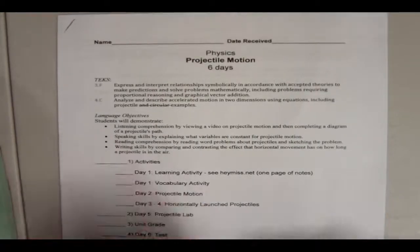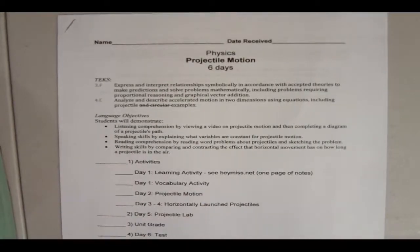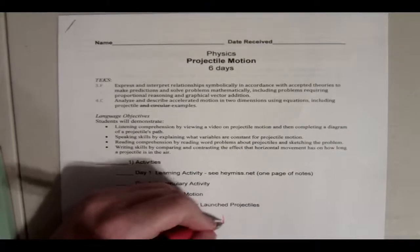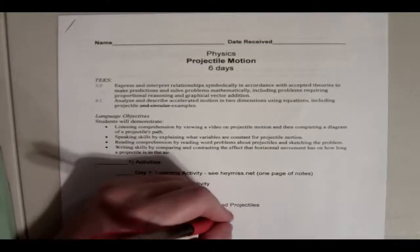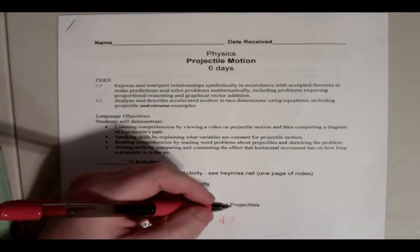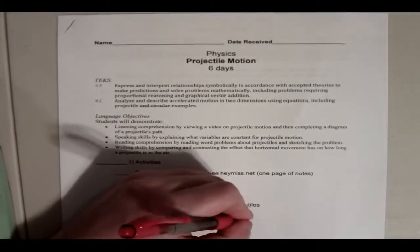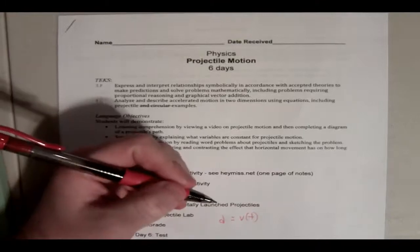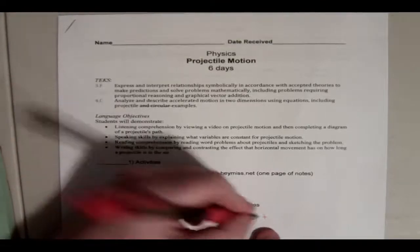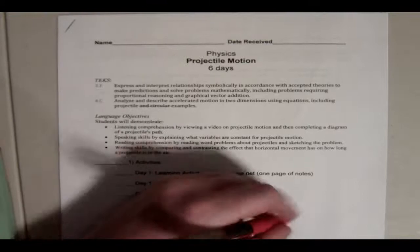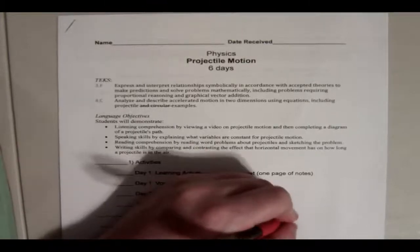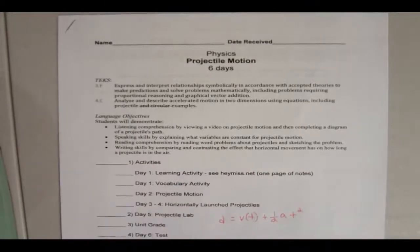It is, and you'll see this in your formula chart, displacement equals velocity times time. I'm going to parentheses this because I'm going to put a plus sign. One half acceleration times time squared. This is our formula.